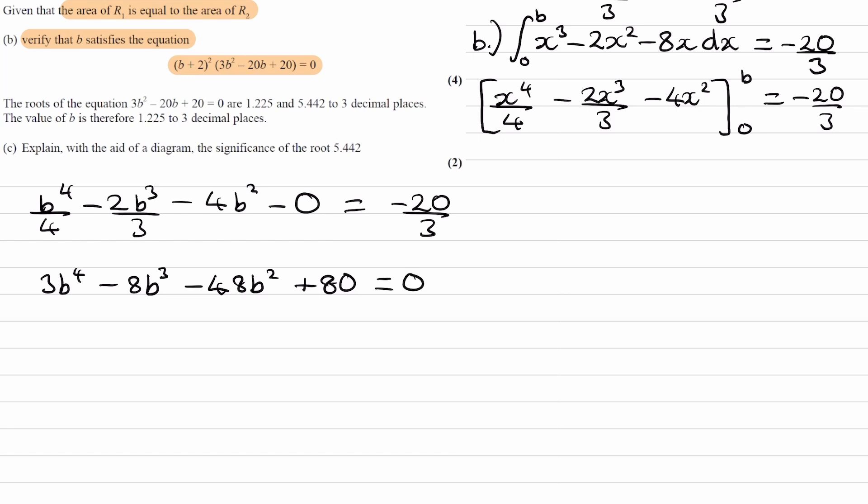I'm going to call this equation 1. We want to show that b satisfies this equation, so this has to somehow be the same or transform into what we have here. The easiest way to show that those two things are the same is just to expand this out. Again, this is a verify question, so we can use the result.